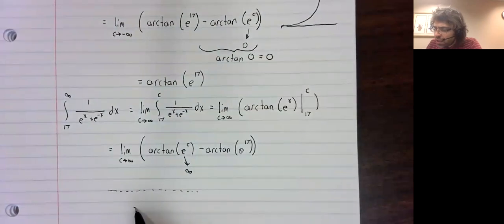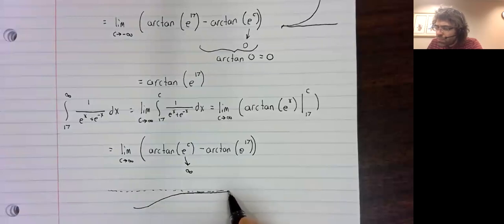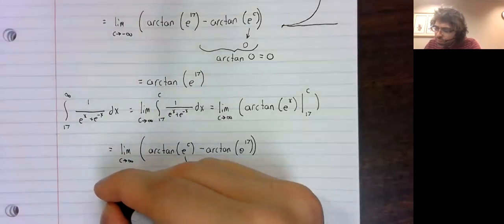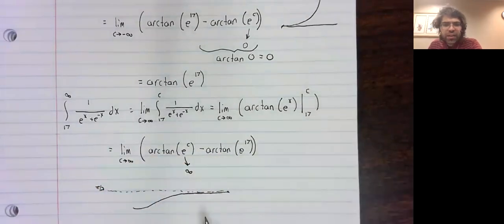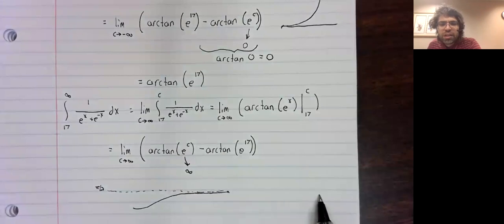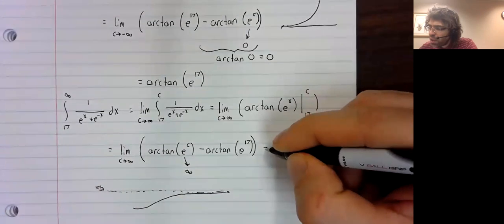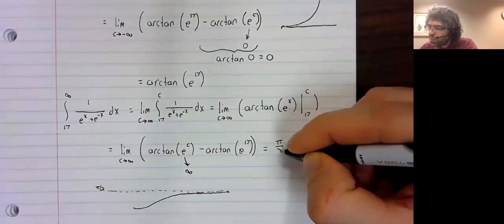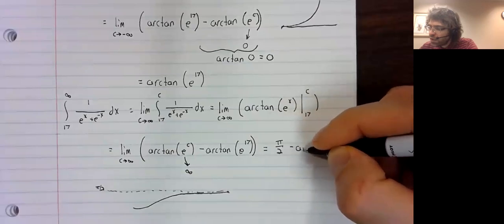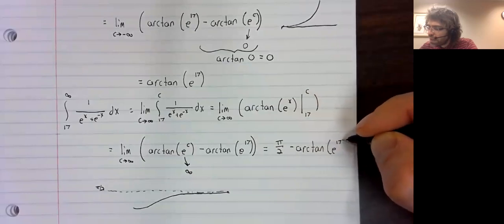Well, remember that the arc tangent has a horizontal asymptote. So as the argument of the arc tangent goes to infinity, the arc tangent is approaching the horizontal asymptote. It's approaching pi over two, giving us that as the limit.